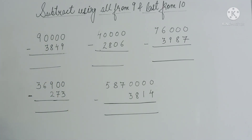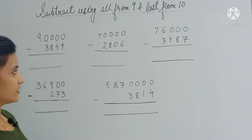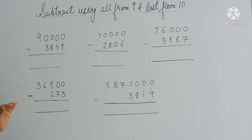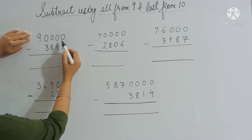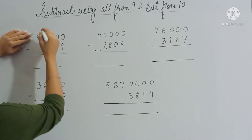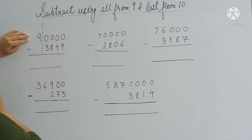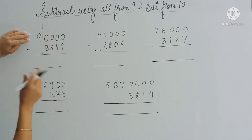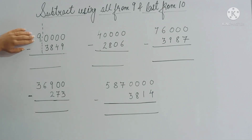We will be using the rule 'all from 9 and last from 10.' The first step is to observe how many zeros are there in the question. You can see here there are four zeros, so you have to separate all the zeros — we are dividing the question into two halves: a left half and a right half.